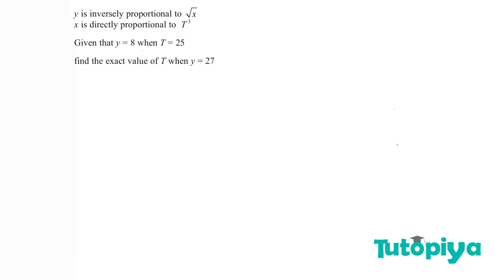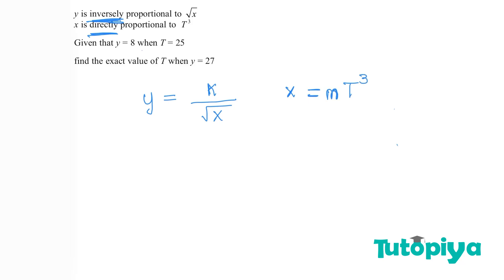The important words here are 'inversely' and 'directly'. Inversely means you put the item it is proportional to underneath, so square root of x goes under some constant k. k or any other letter is completely up to you. x is directly proportional, so I'll take m as my constant — this time multiplying t cubed, because it's direct proportionality. Inversely goes under; directly just multiplies.